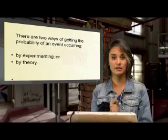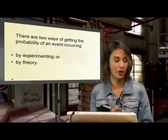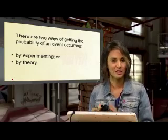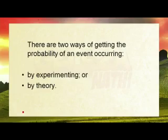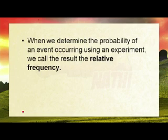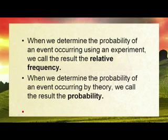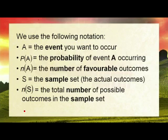There are two ways of getting the probability of an event: by experimenting or by theory. When we determine the probability using an experiment, we call this relative frequency — we're not going to deal with relative frequency today. We're dealing with theory, so when we determine the probability of an event occurring by theory, we call the result probability.